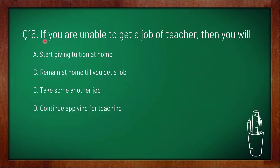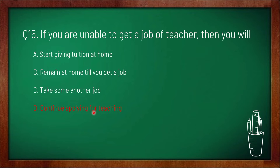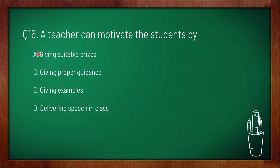Question 15: if you are unable to get a job as a teacher, you will — option A: start giving tuition at home, option B: remain at home till you get a job, option C: take some other job, option D: continue applying for teaching. Question 16: a teacher can motivate students by — option A: giving a suitable prize, option B: giving proper guidance, option C: giving examples, option D: delivering speech in class. Option A is correct — a teacher can motivate students by giving them a suitable prize.